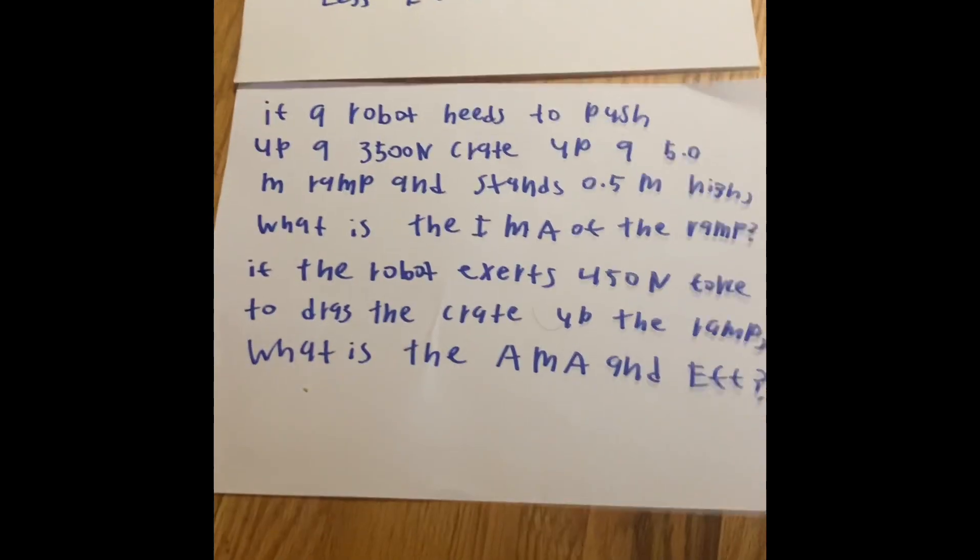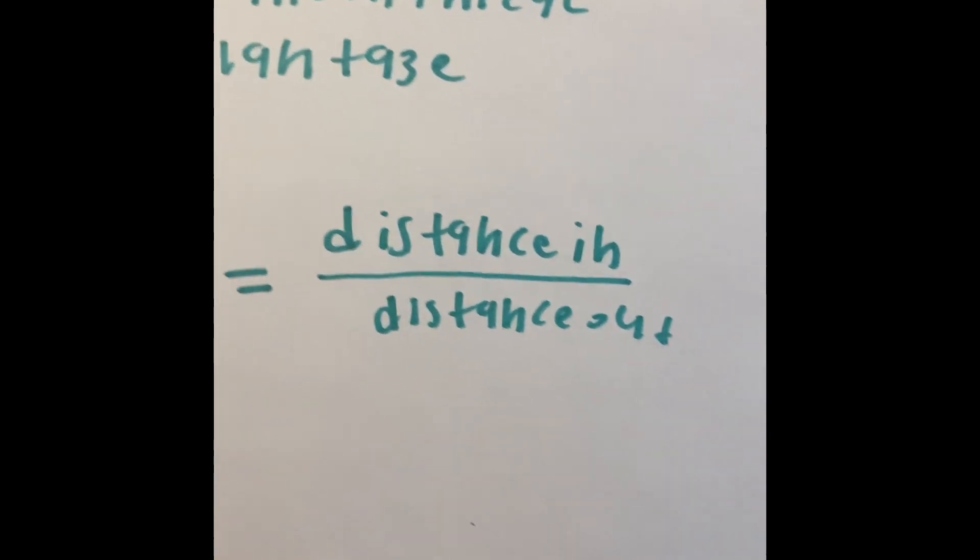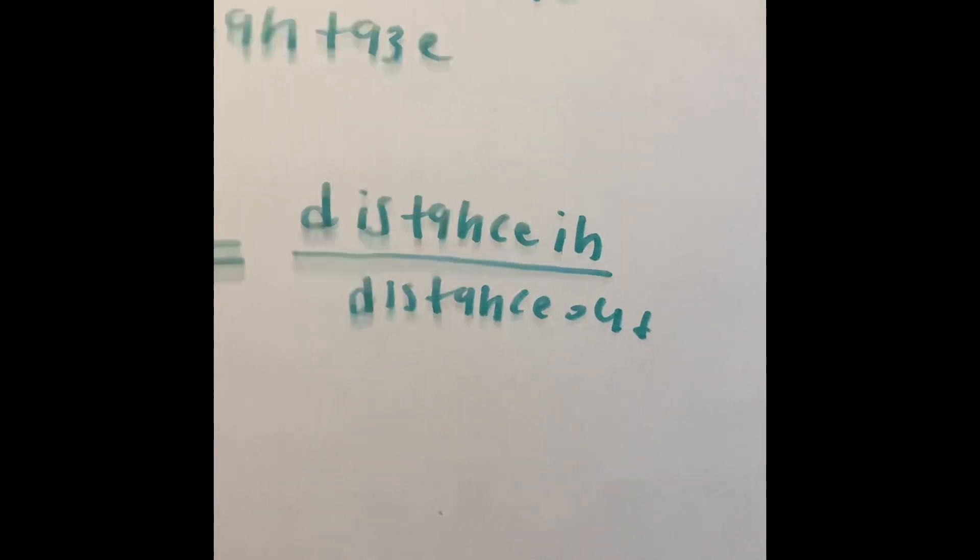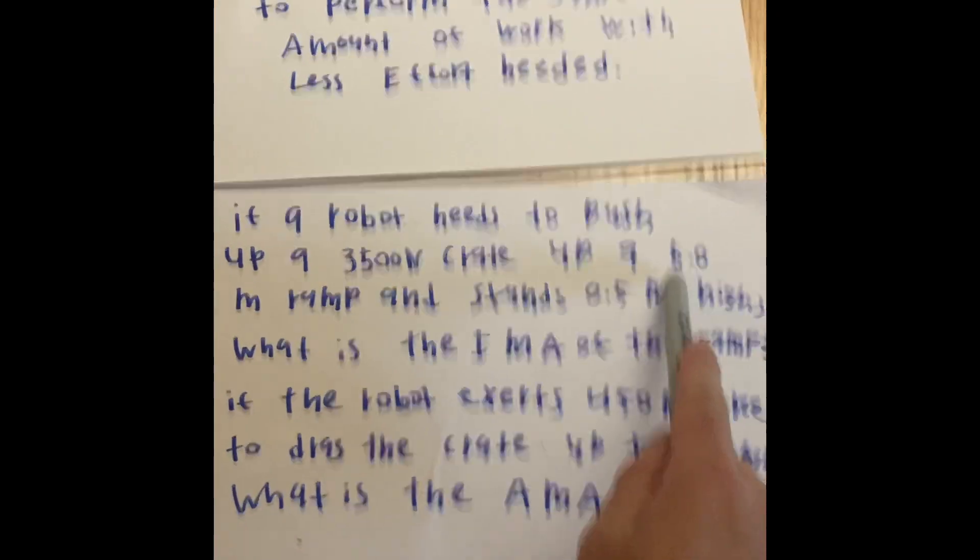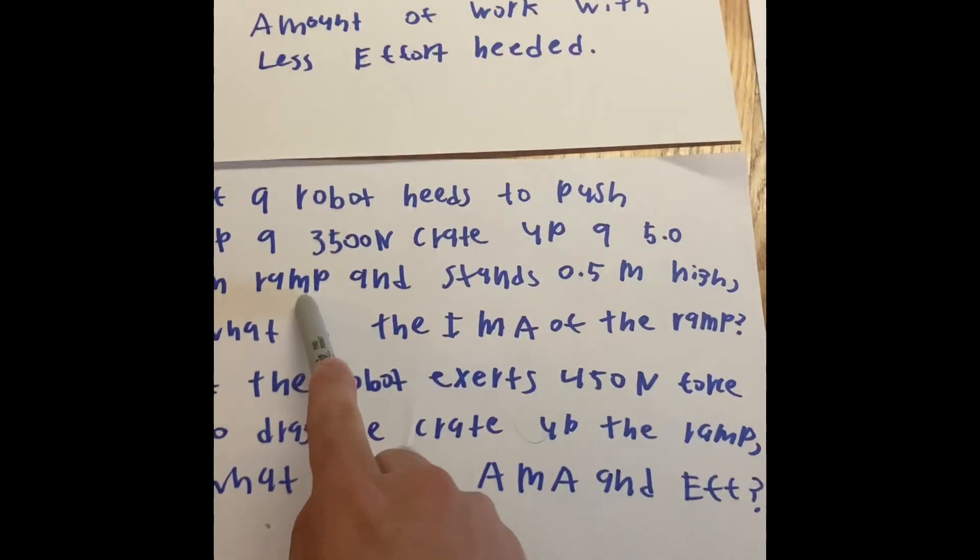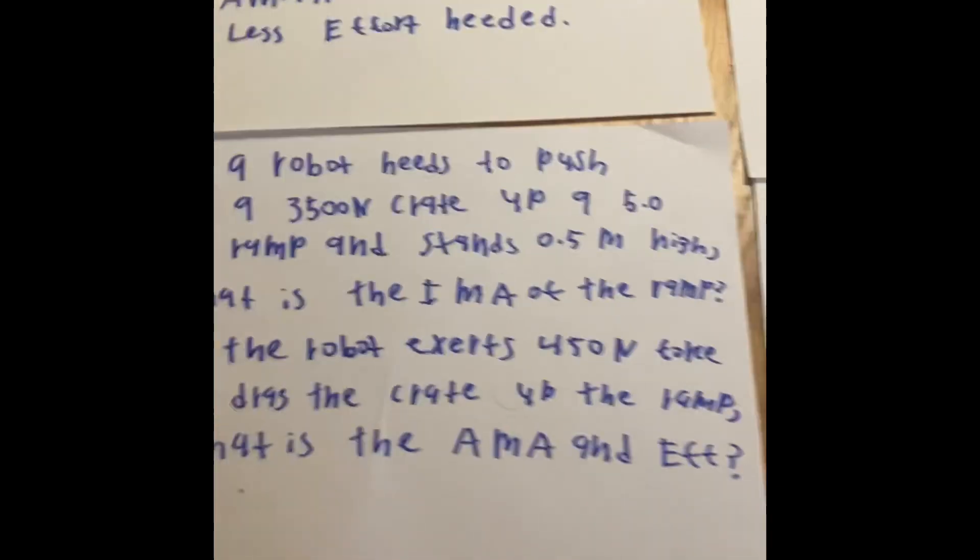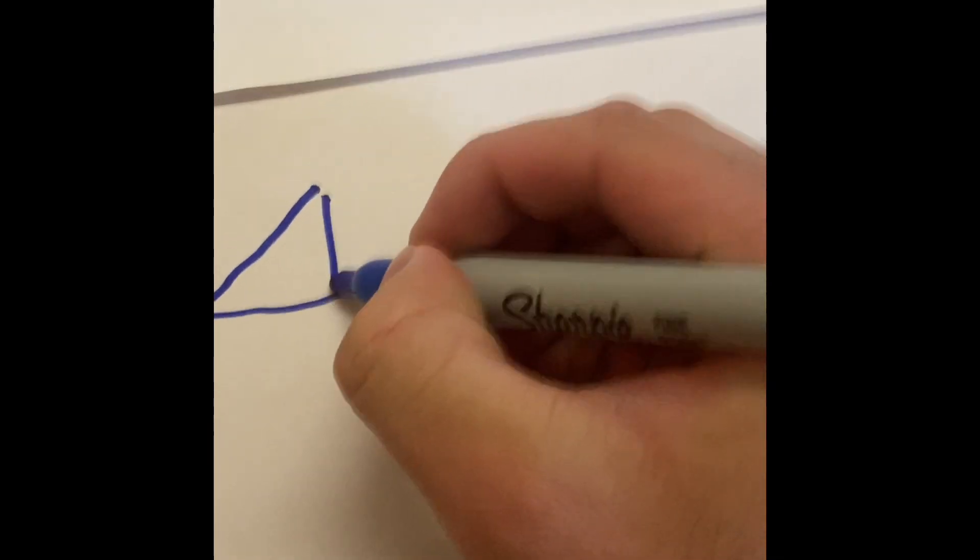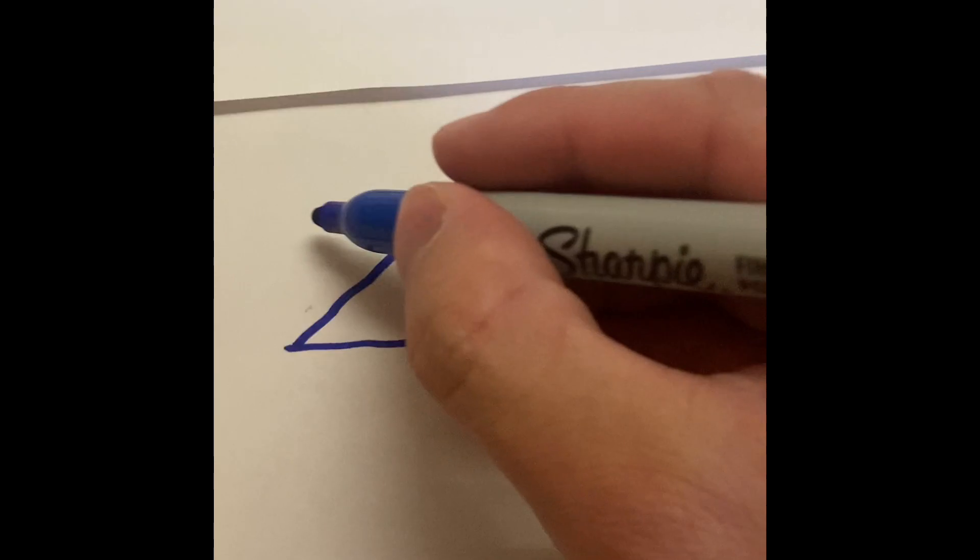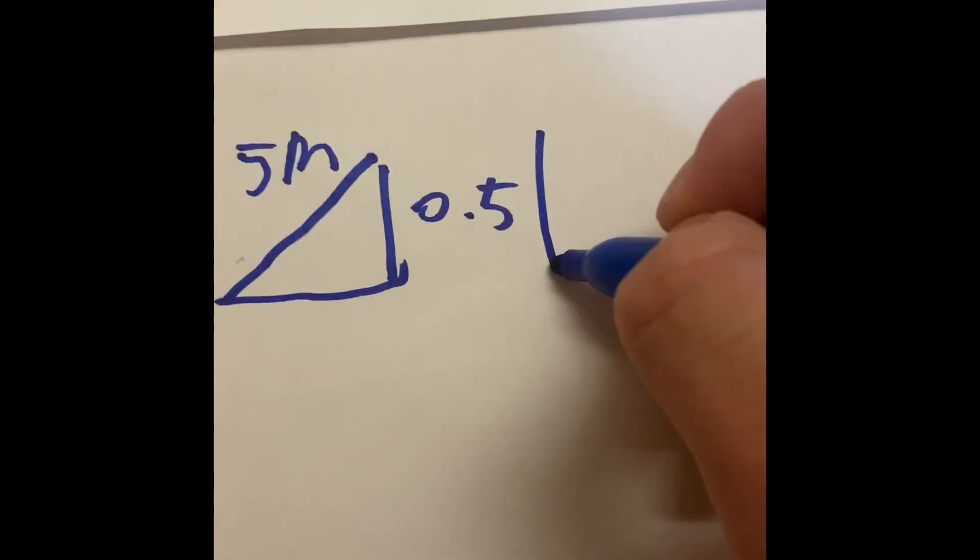So let's start calculating the IMA. The formula for IMA is the distance in, divide that by the distance out. So when we come to the word problem, we have five meters up the ramp, and we have the ramp stand at 0.5 meters high. So what's that visualizing is, if this is a ramp, it creates a right triangle, an inclined plane. Five meters is up here, and 0.5 is the height from here to there.